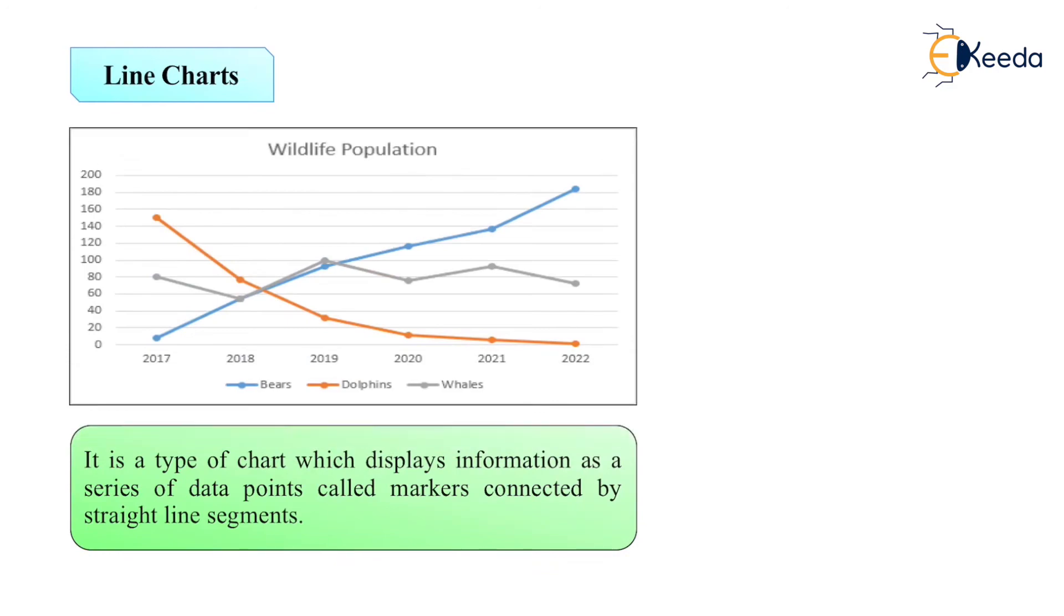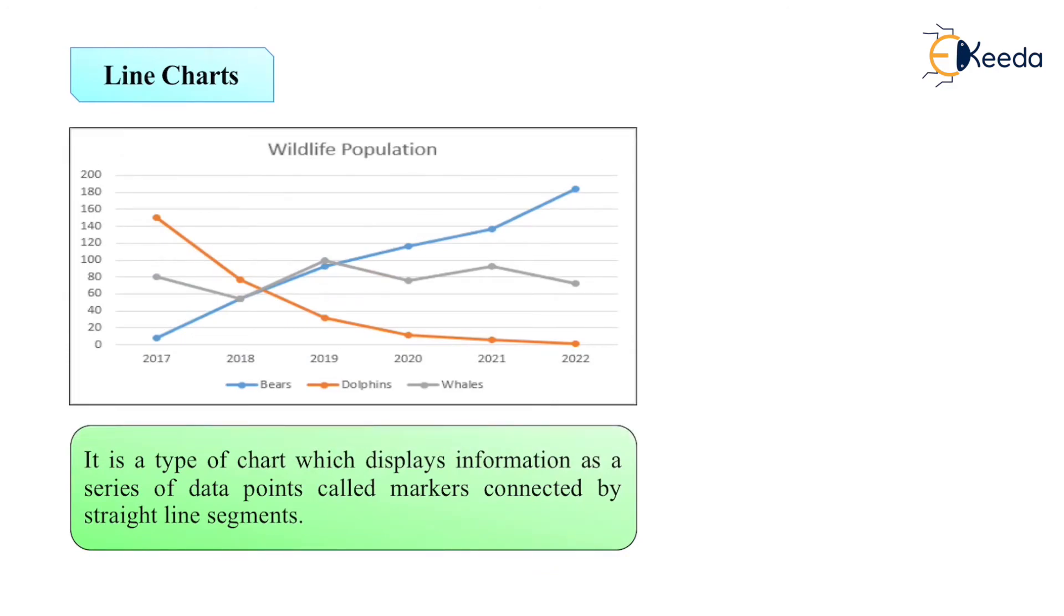Next is line chart. Different lines we can form and through that we can form curves also. It is a type of chart which displays information as a series of data points, which is also called as a marker, which is connected by straight lines.